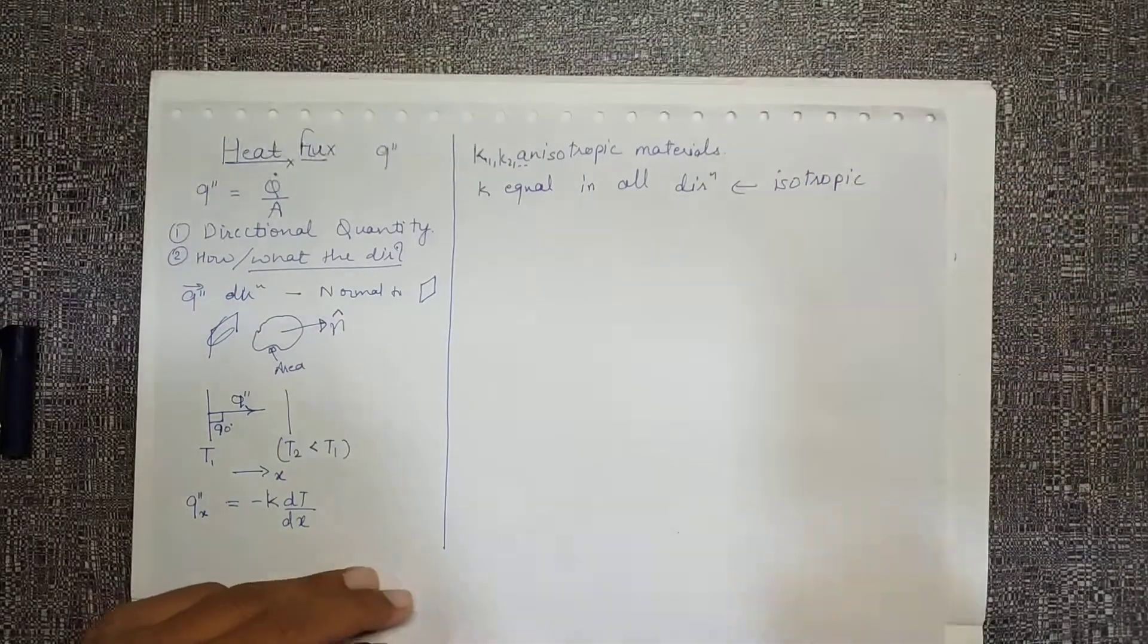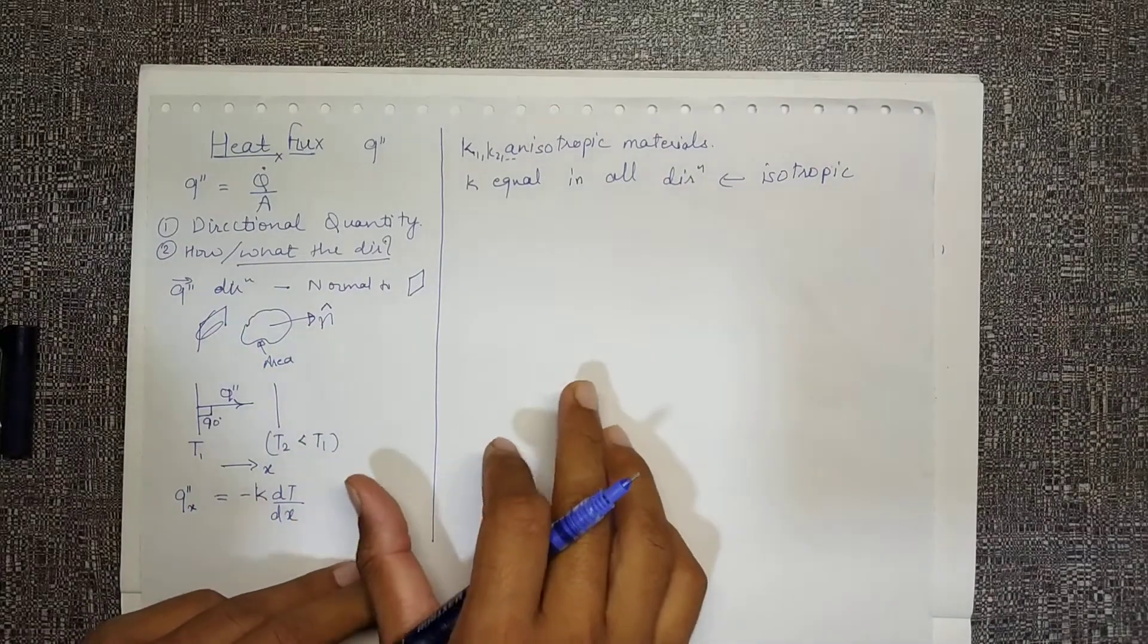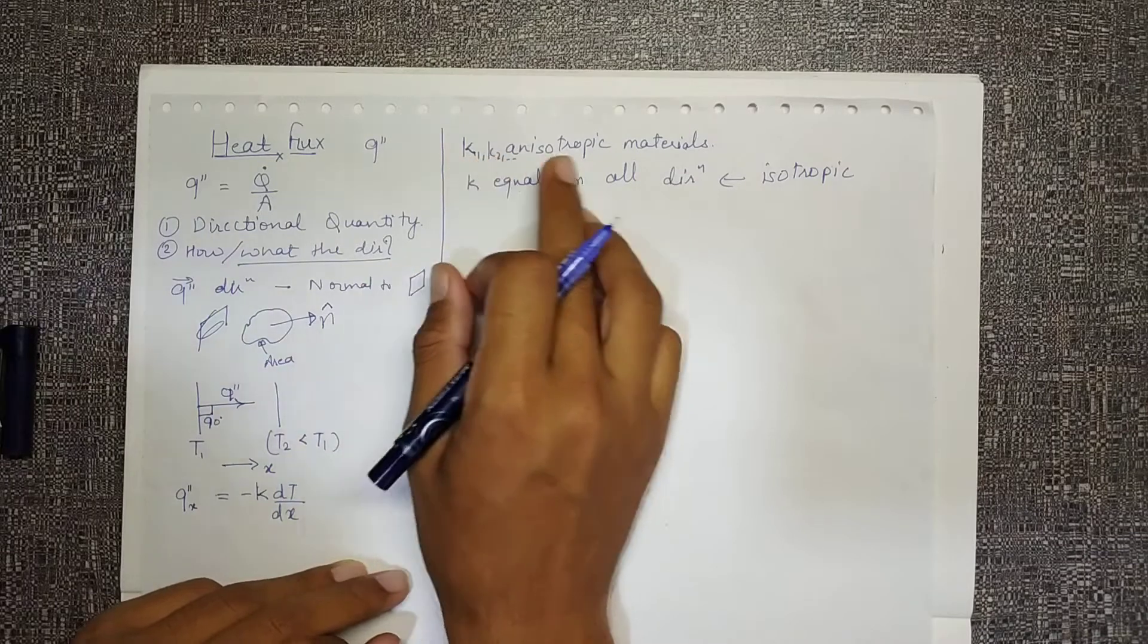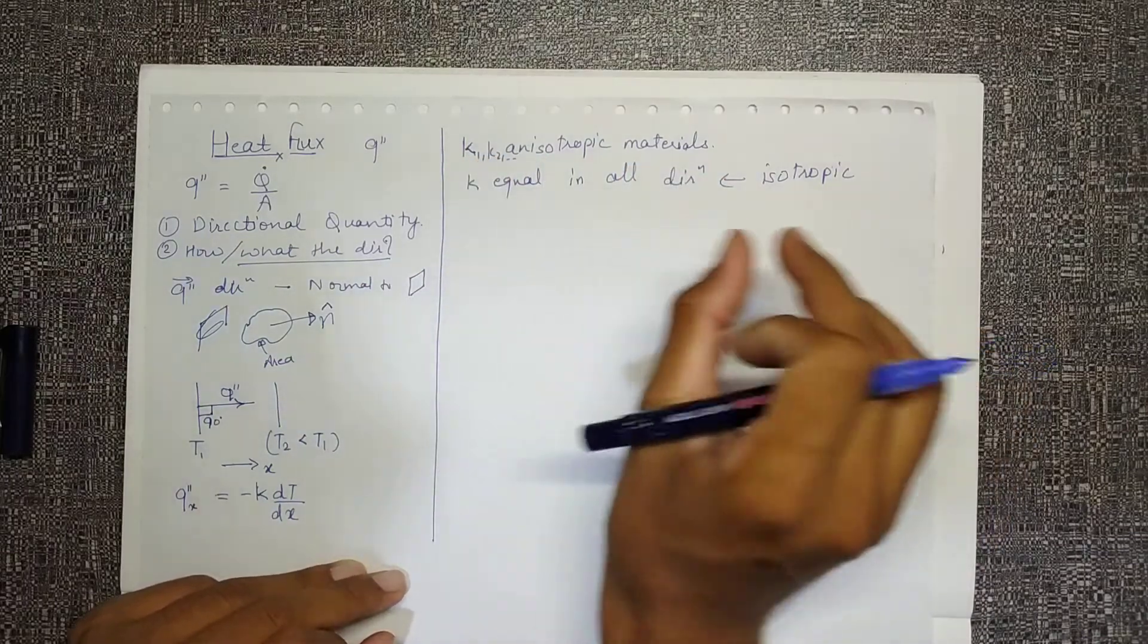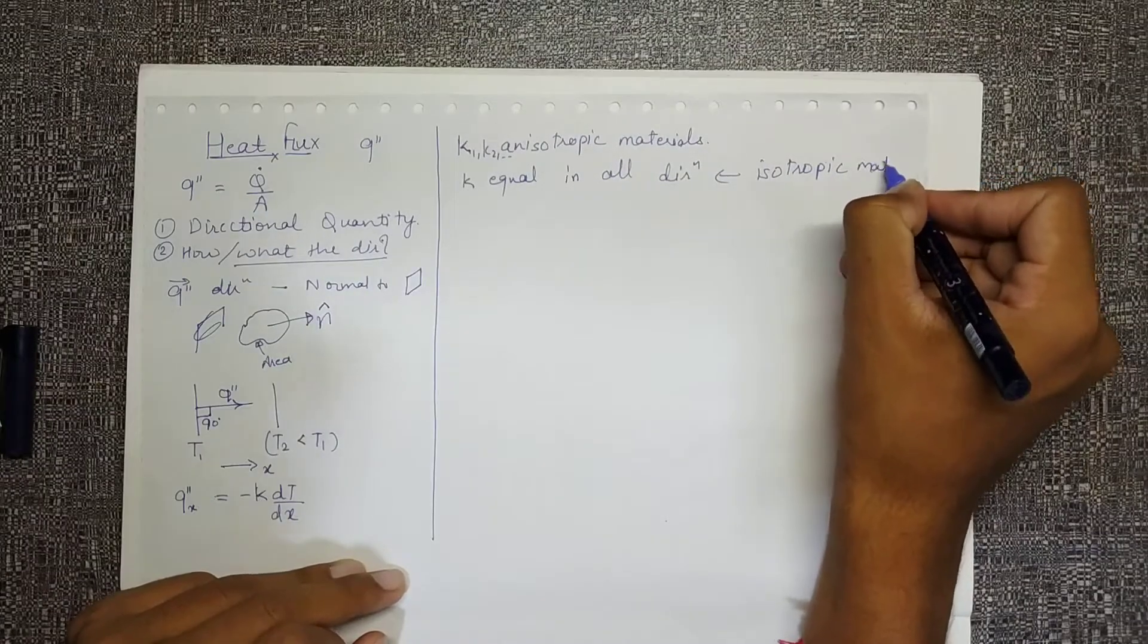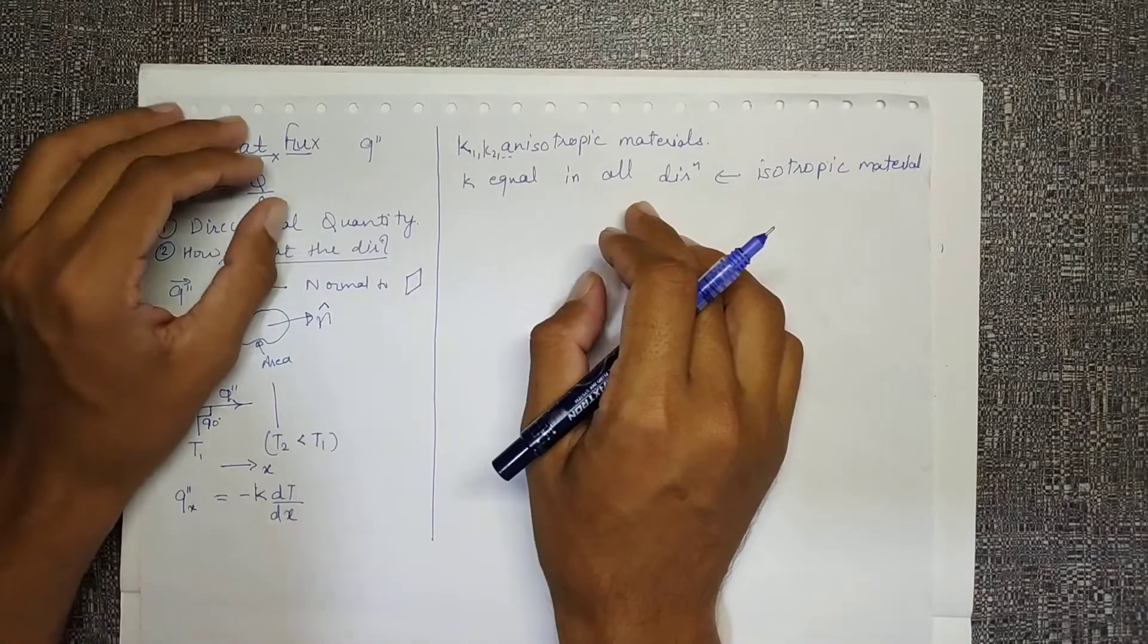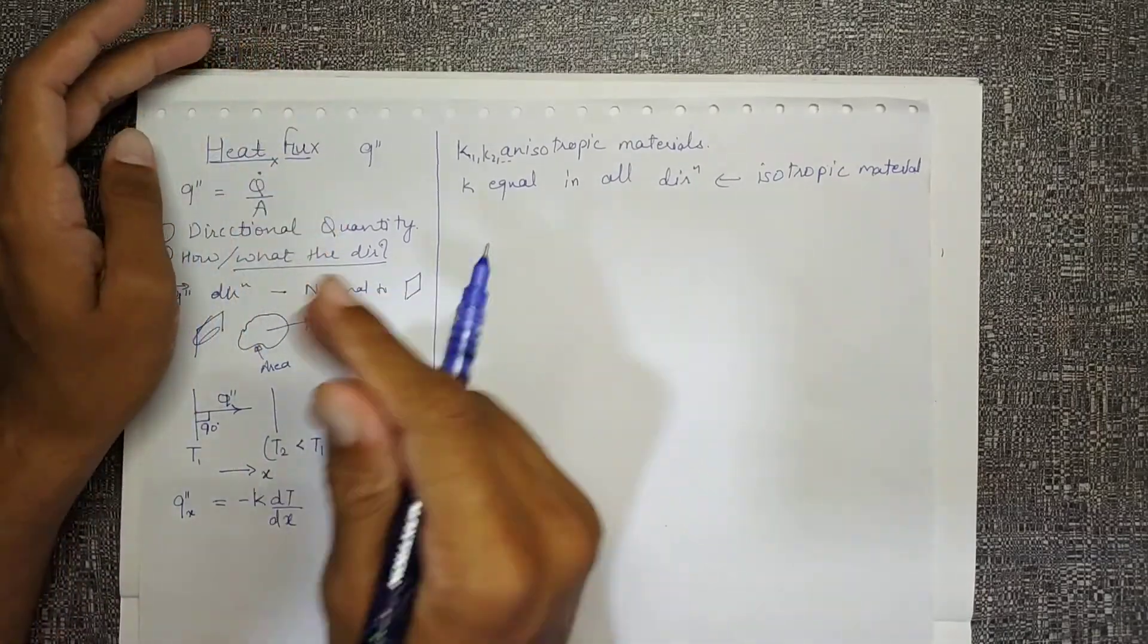Generally we will not find any question related to heat transfer where we are given with multiple different values of k for any material. We'll always be assuming that it is isotropic material. Hence my k value is same in all directions.